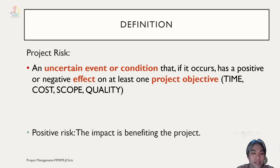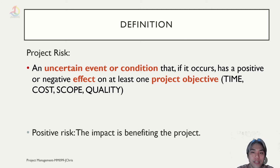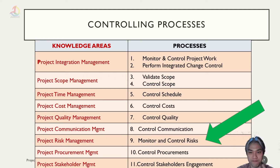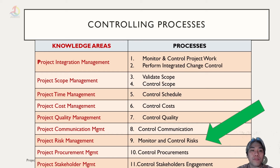Project risk is an uncertain event or condition that, if it occurs, has a positive or negative effect on at least one project objective. The main project objectives are constrained within time, cost, scope, and quality. There are positive risks whose impact will benefit the project, and there are negative risks that require our proactive effort to mitigate the problems that arise.